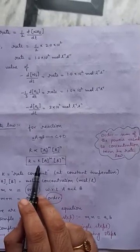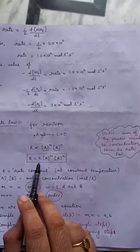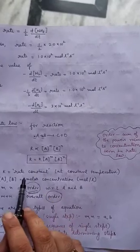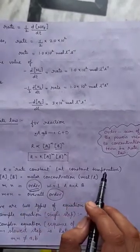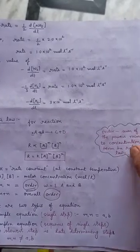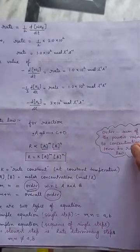The expression involves K. This K is known as rate constant which is at constant temperature. Why I have mentioned constant temperature? Because when the temperature changes, the rate of reaction also changes.